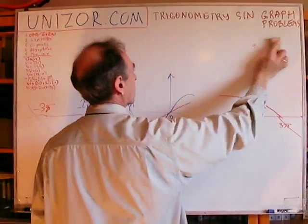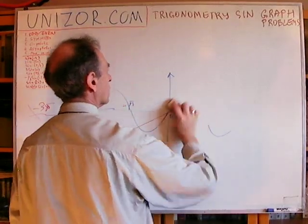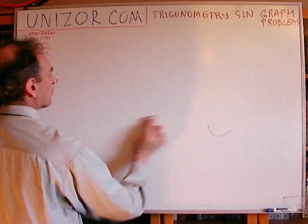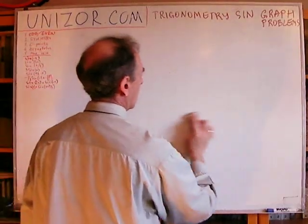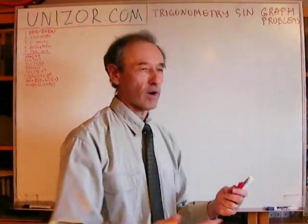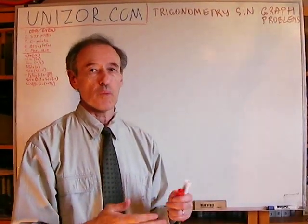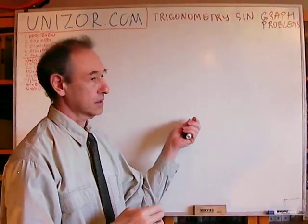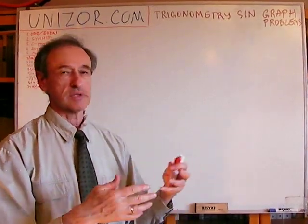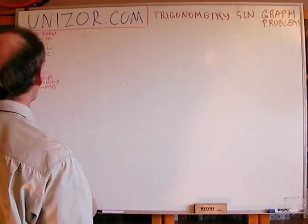Whatever I was just talking about is true for any function, not only sine or cosine. Basically, if you know the properties of graph transformations — how the graph changes when you manipulate the argument by dividing, multiplying, or adding something — this should be no problem.